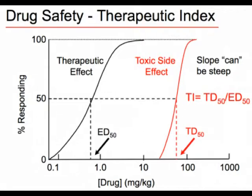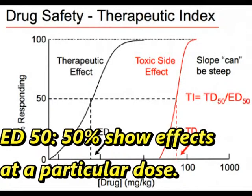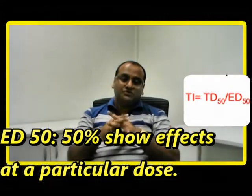You can appreciate TD50 on the red line of the graph. On the other side is ED50, the Effective Dose 50, where 50% of the population under study start showing effects of the drug. This is a median value seen on the black DRC on the left of the graph. So therapeutic index is a core mathematical value with the formula TD50 divided by ED50 — a ratio that relates to the therapeutic window we discussed.